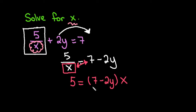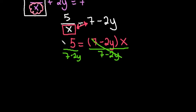So now what I want to do is to get x by itself I'm going to divide by the expression 7 minus 2y. So this ends up canceling out. And my final answer is just going to be x equals 5 over 7 minus 2y.